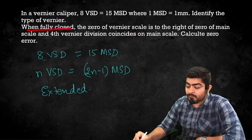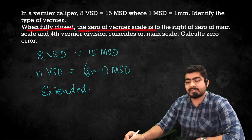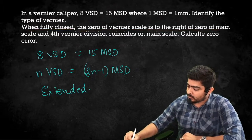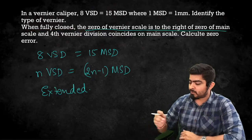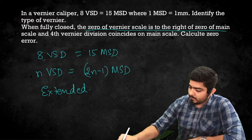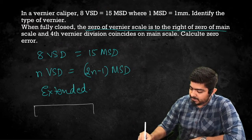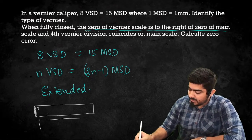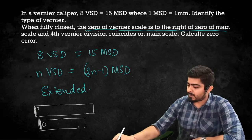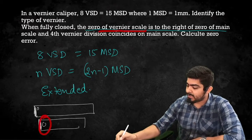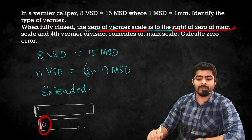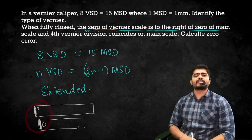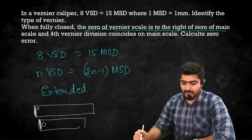When fully closed, the 0 of Vernier Scale is to the right of 0 of Main Scale. Is this a positive or negative zero error? Since Vernier 0 is to the right of Main Scale 0, the main scale reading at 0 is 0, so yes — this is a positive zero error.